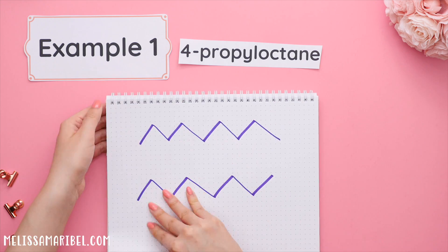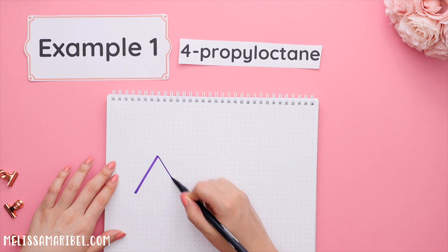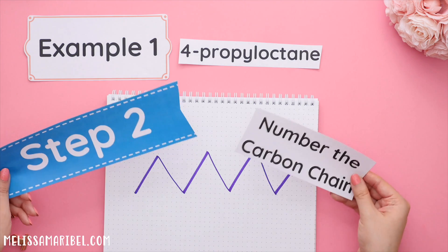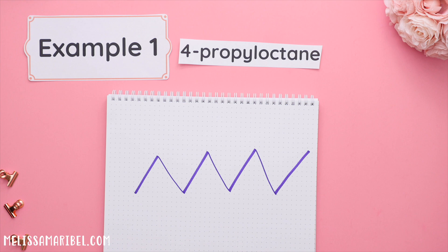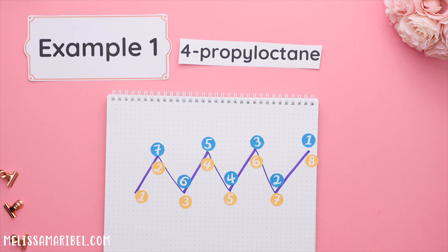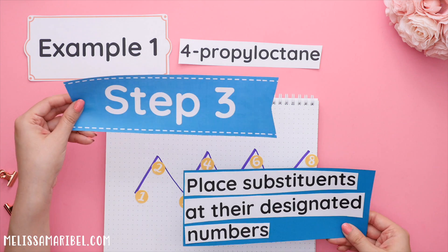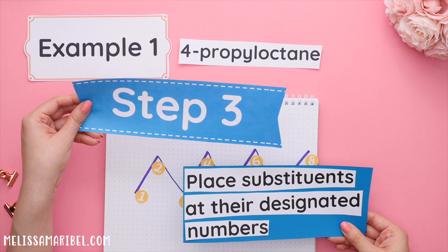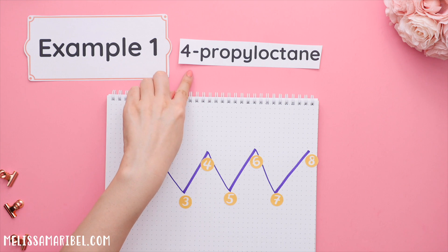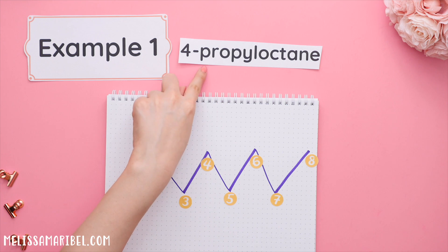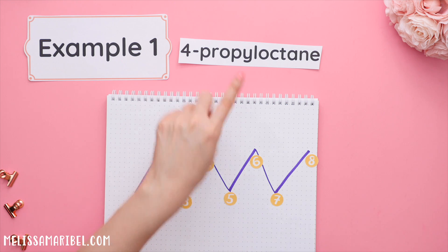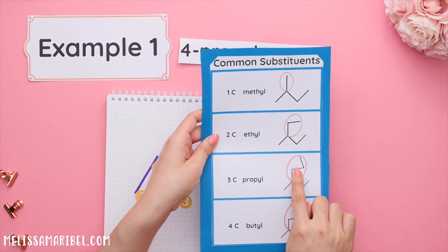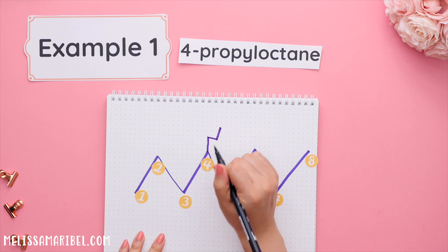So we will do the same for this example since it states octane and we know that's eight carbons. Step two: number the carbon chain. We can number the carbon chain either from left to right or right to left — I'll number it from left to right. Step three: place substituents at their designated numbers. In this case, we only have one substituent located at the fourth carbon on our carbon chain. Remember, propyl has three carbons. So this is the structure for 4-propyloctane.